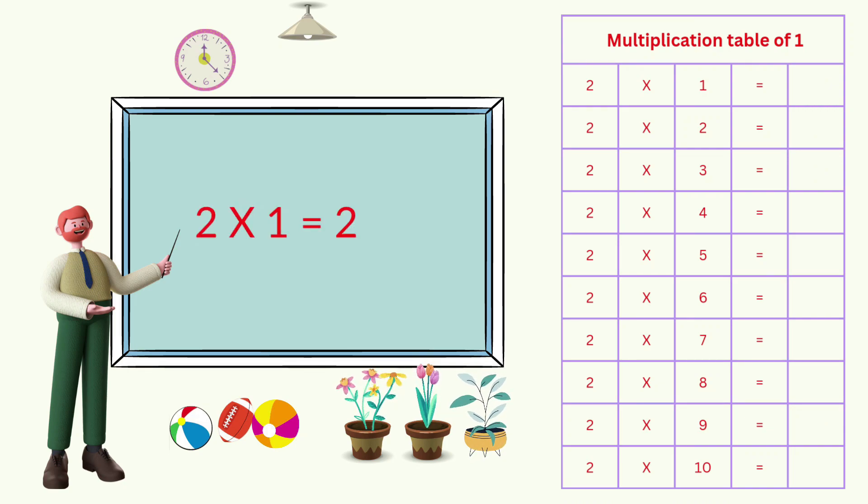2 times 1 equals 2. 2 times 2 equals 4. 2 times 3 equals 6. 2 times 4 equals 8. 2 times 5 equals 10.